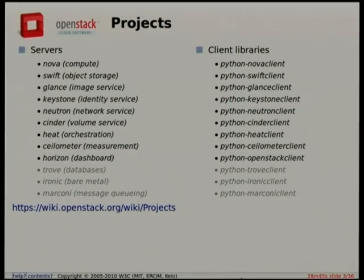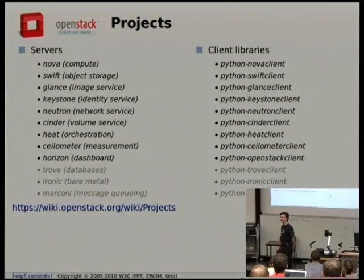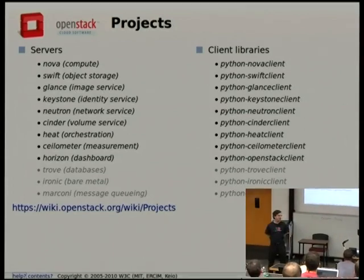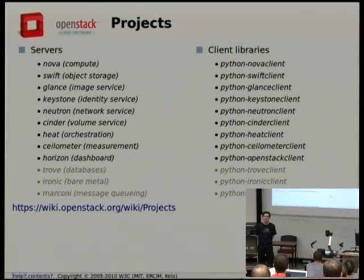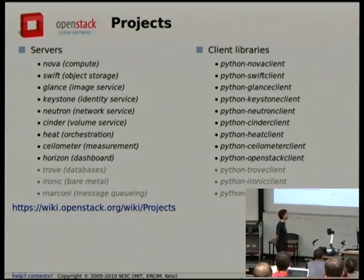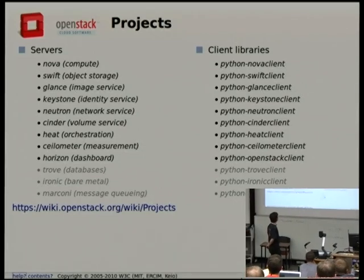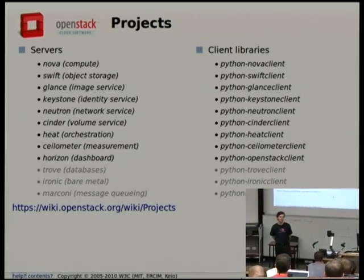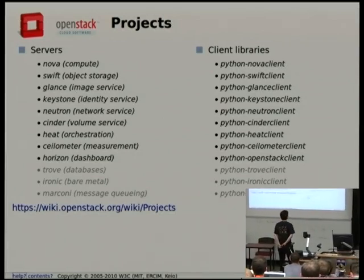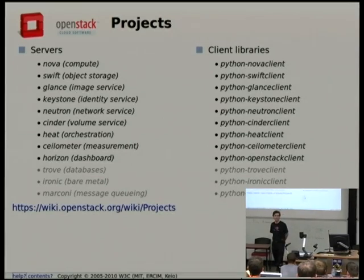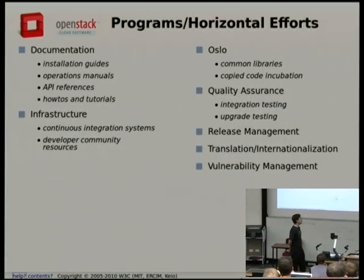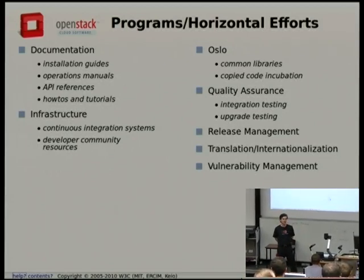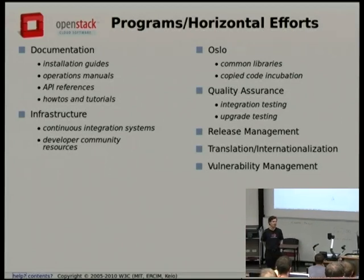A lot of what we do is driven by the complexity of OpenStack itself. I'm going to refer to it as a single project, but it's really composed of a lot of individual software components, which are their own projects led by their own groups of people, with their own Git repositories. On the left we have servers that manage compute and storage systems; on the right are the client libraries, all in Python. OpenStack itself is all written in Python, and that drives some of the decisions and tooling I'll talk about.